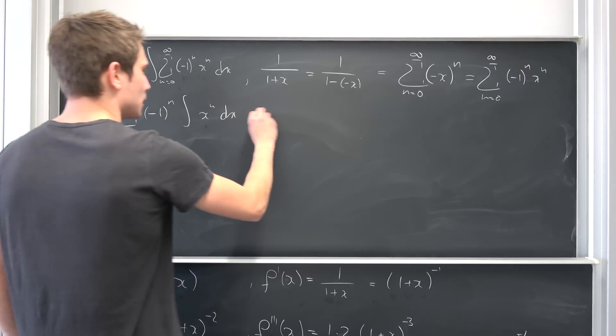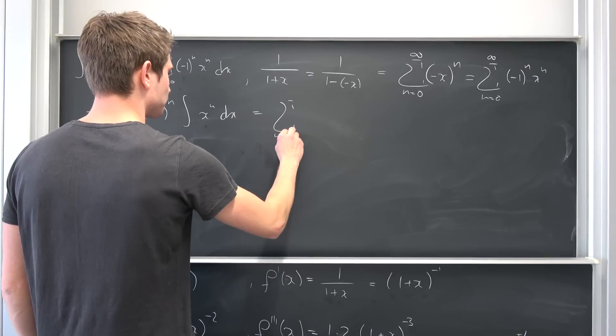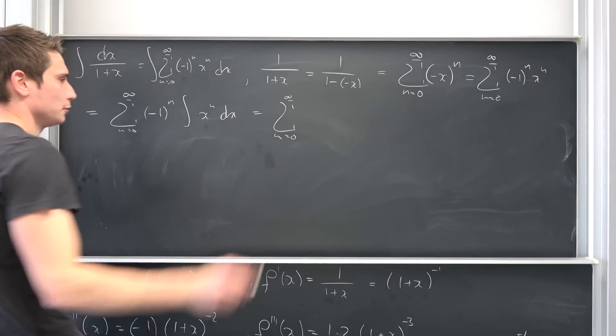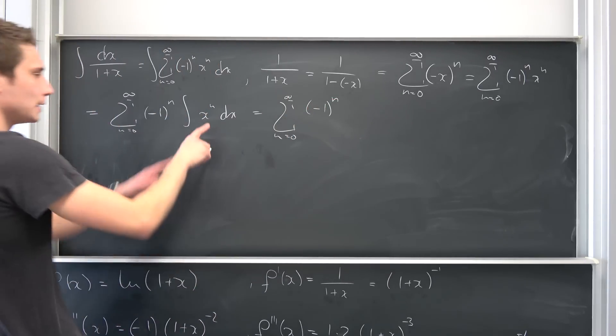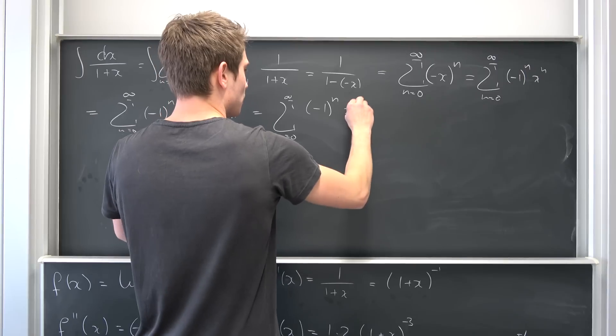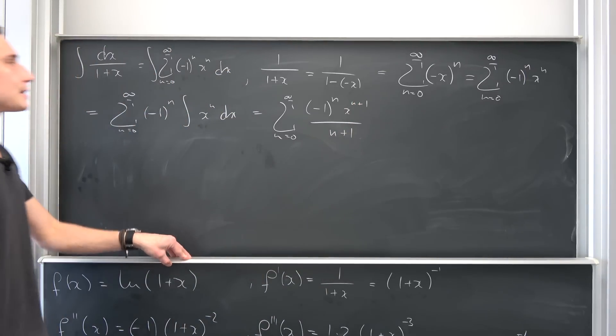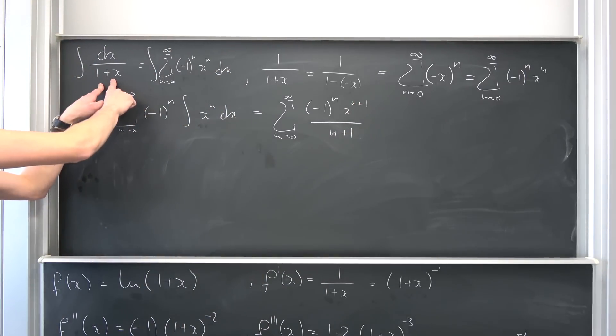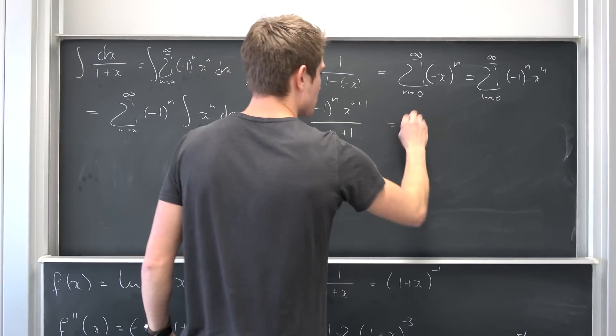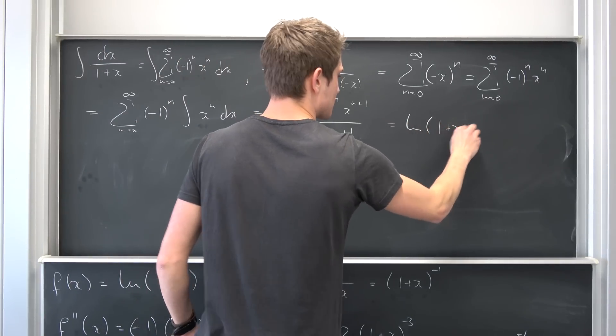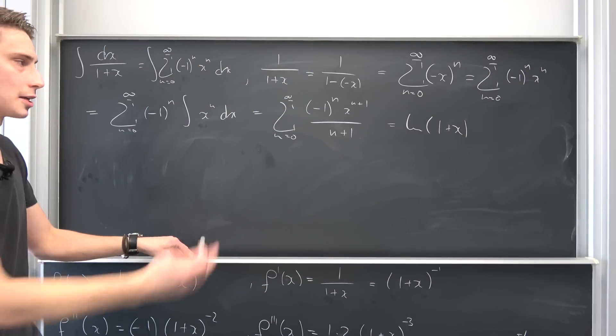This is nothing but the infinite sum running from 0 to infinity. Negative 1 to the n power is independent of x, let's bring it to the outside. Integral of x to the n power integrated with respect to x. Integrating this is actually quite easy. We're going to end up with sum running from 0 to infinity, negative 1 to the nth power, then we have x to the n plus 1 power over n plus 1. And we know what this is going to vary to. This is nothing but the natural log of 1 plus x.